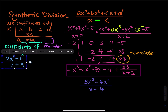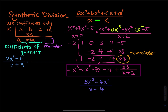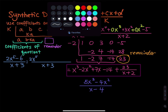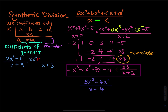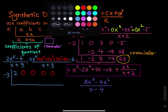Moving on to the next problem. We have x to the third in the denominator as the divisor, and then we have two x to the fifth in the dividend. So degrees four, three, two, and one are all missing — we have to add them back: zero x to the fourth, plus zero x to the third, plus zero x squared, plus zero x, and finally minus six. Prepare the synthetic division: the divisor is x minus k, but we have x plus three, so this is going to be negative three. Draw a big L. Coefficients: two, zero, zero, zero, zero, and negative six.